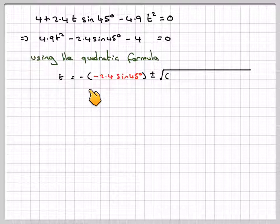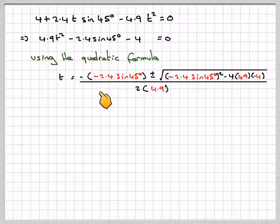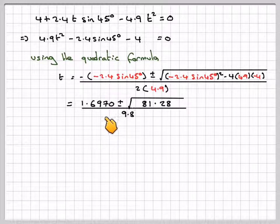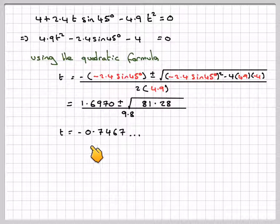So using the quadratic formula, we've got t equals minus b. So minus b is minus minus 2.4 sin 45 plus or minus b squared. So it's minus 2.4 sin 45 squared minus 4 times 4.9 times minus 4, all divided by 2 times 4.9. And on my calculator, this is going to give 1.6970 plus or minus the square root of 81.28 divided by 9.8.